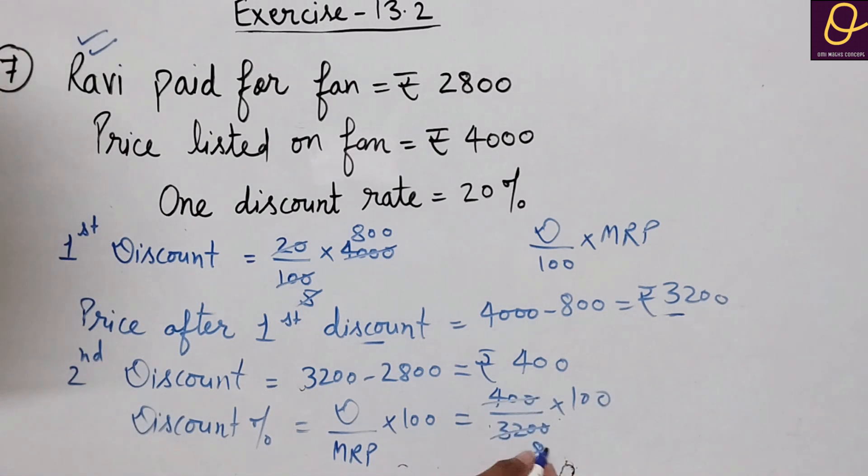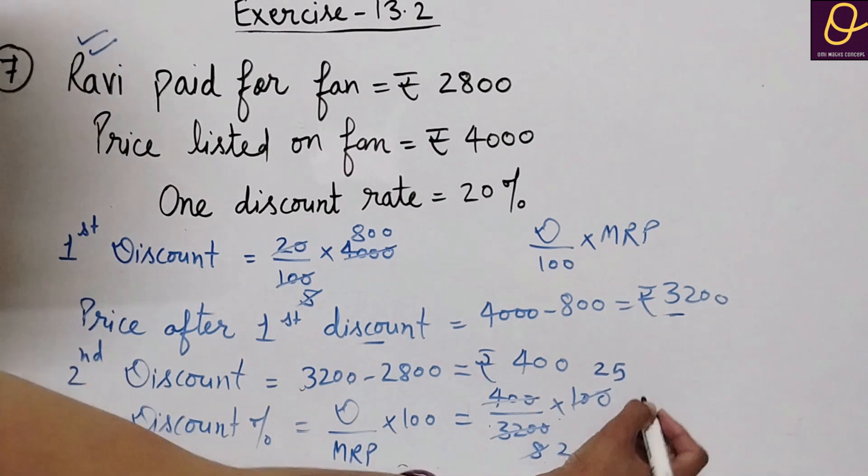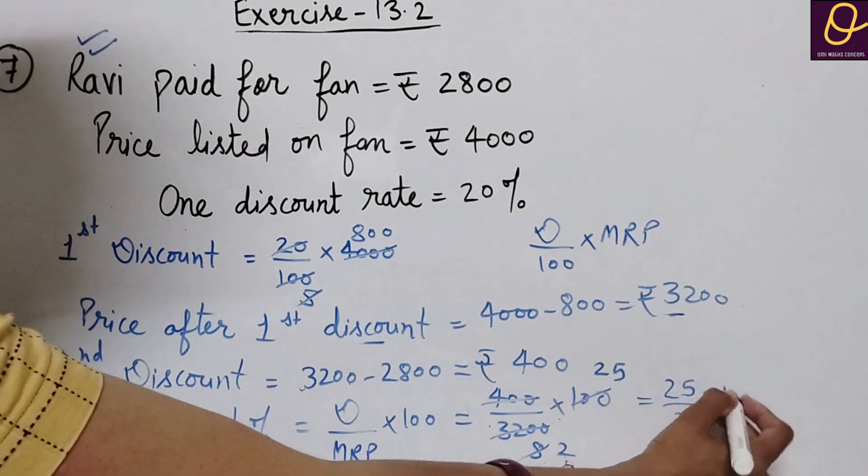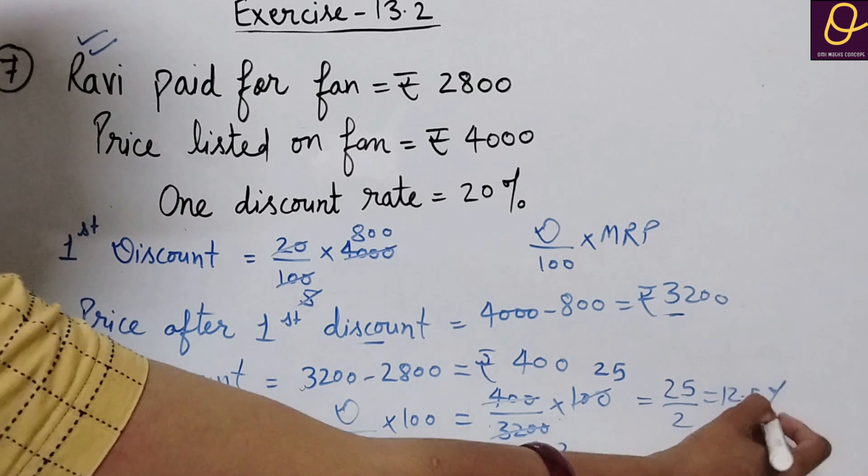So four hundred divided by three thousand two hundred into hundred. Canceling, we get twenty five by two.